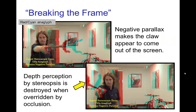Another effect to consider is called breaking the frame. This occurs when an object with negative parallax — coming out of the screen — touches the side of the frame. When it does, it gets cut off, and by occlusion we perceive it as being inside the screen. However, due to its negative parallax, stereopsis tells us it's outside the screen. These conflicting depth cues create a jarring disruption of the stereoscopic effect. As a result, filmmakers tend to keep objects with negative parallax near the center of the screen.